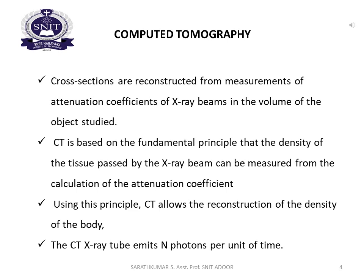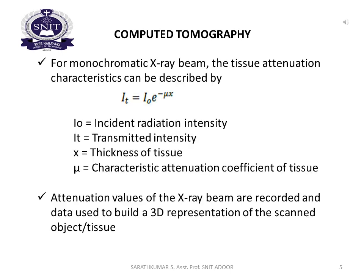The CT X-ray tube emits N photons per unit of time. For a monochromatic X-ray beam, the tissue attenuation can be described by the equation: I_T = I_0 · e^(−μx), where I_0 is the incident radiation intensity, I_T is the transmitted intensity, x is the thickness of tissue, and μ is the characteristic attenuation coefficient of tissue. The attenuation values of the X-ray beam are recorded and the data is used to build a 3D representation of the scanned tissue.